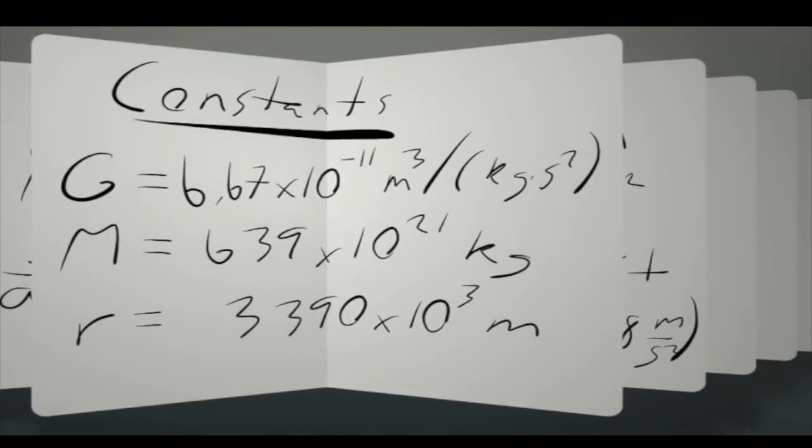The constants that we're going to use are capital G is equal to 6.67 times 10 to the minus 11 meters cubed divided by kilograms times second squared. The mass of the planet Mars is equal to 6.39 times 10 to the 23rd kilograms and the radius of the planet from the center to the surface is 3390 times 10 to the third meters.